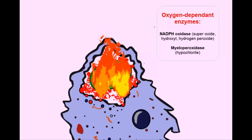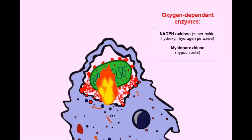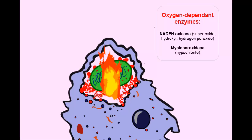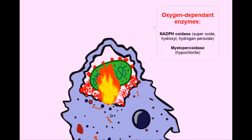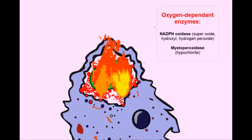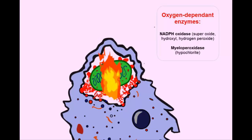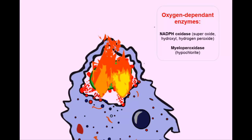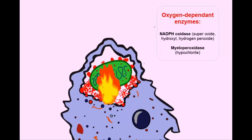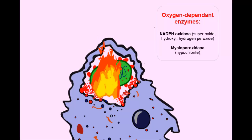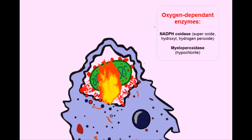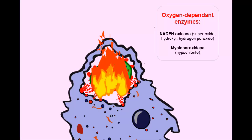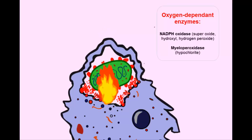And the first of our oxygen dependent killing mechanisms is by an enzyme which is NADPH oxidase. And the function of this enzyme NADPH oxidase is that it reduces oxygen into your superoxide anion which then generates hydroxyl radicals and hydrogen peroxide which are both toxic and deadly to microbes. So it basically generates lots of oxygen free radicals to kill the bacteria.